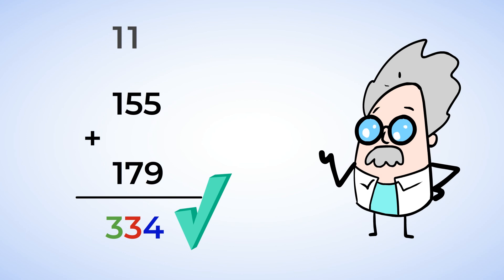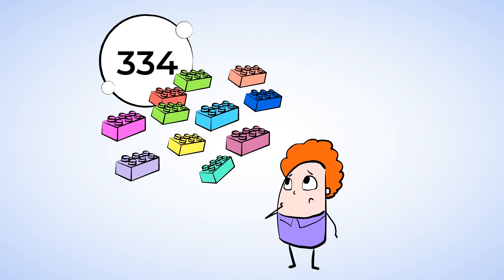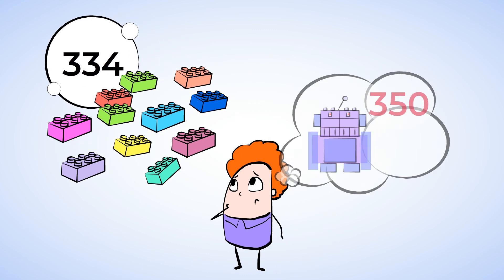Now, there's great news and there's bad news. The great news is that we found the answer. But the bad news is the answer. 155 plus 179 is 334. Together, you and your friend have only 334 LEGO pieces, which isn't enough to build that 350 piece robot according to your plans.